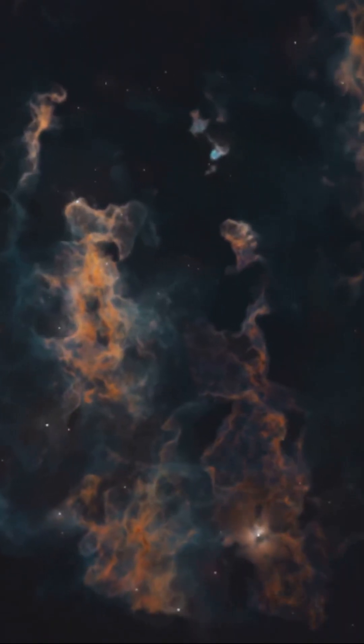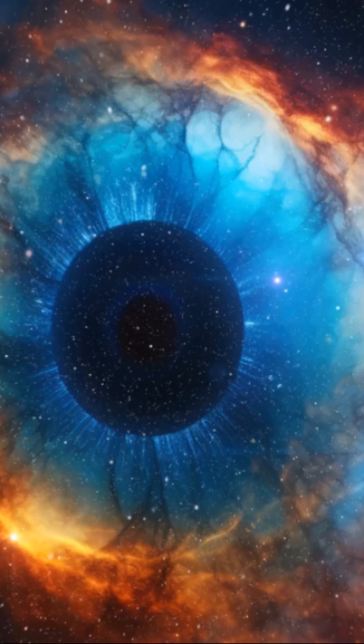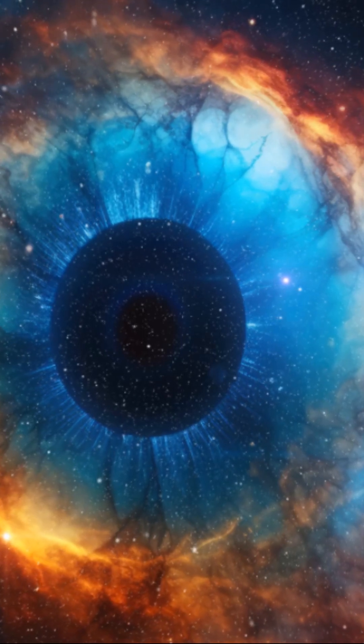Planetary nebulas form when a dying star sheds its outer layers, creating a shell of ionized gas. The Cat's Eye Nebula is an example of a planetary nebula.